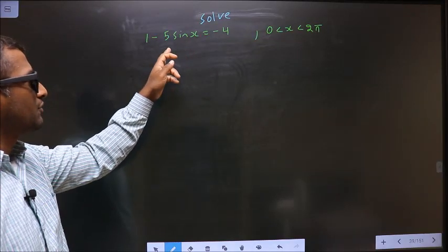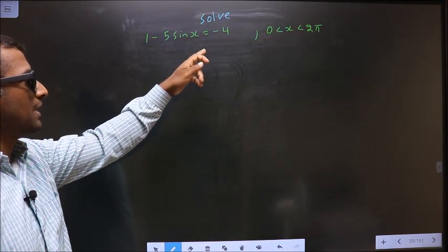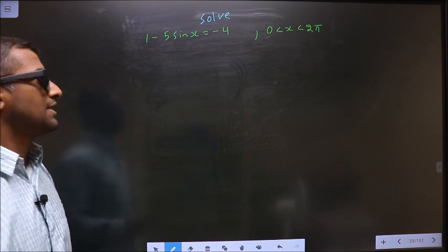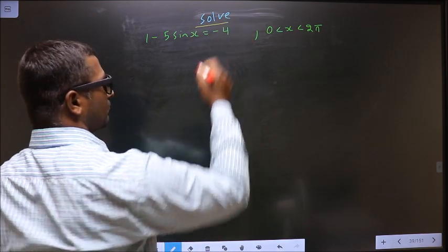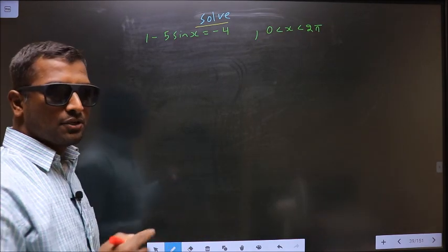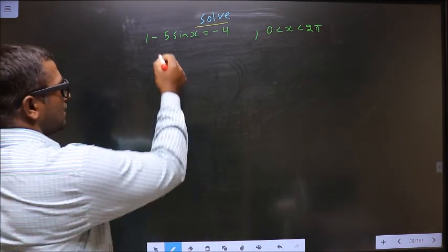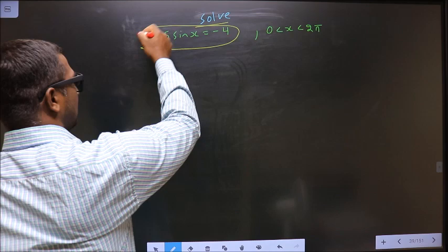Solve 1 minus 5 sin x equal to minus 4, where x lies between 0 to 2π. They told you to solve, so you should find values for x satisfying this equation.